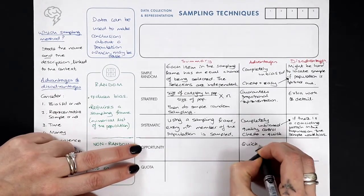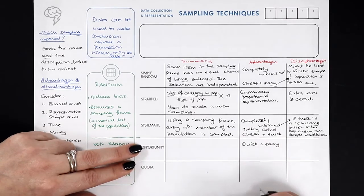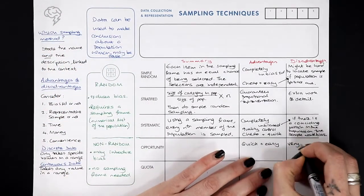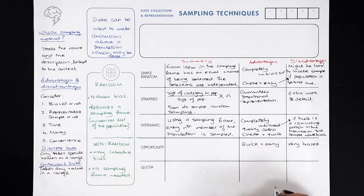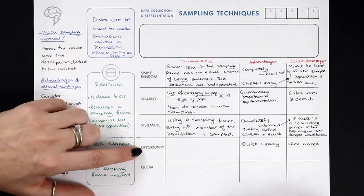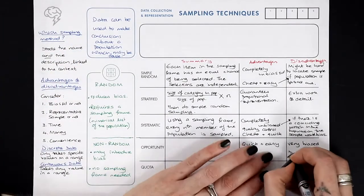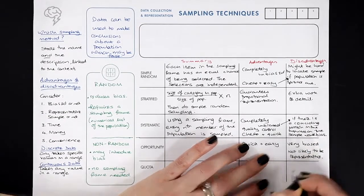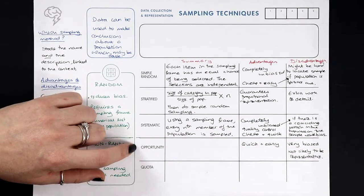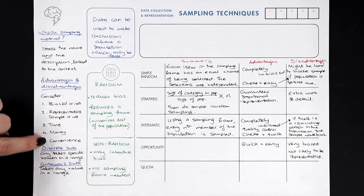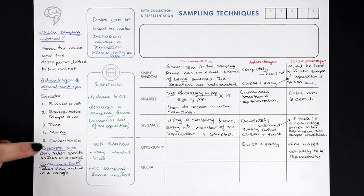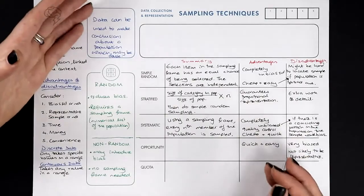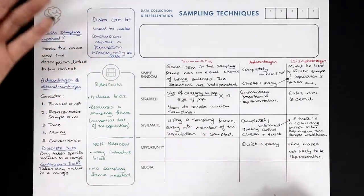Opportunity sampling is quick and easy but gives the researcher complete control over the sample — making it highly biased. You take the sample from the population that is most convenient, which is why it's sometimes called convenience sampling. The researcher just chooses whatever makes their life easiest, so a representative sample is very unlikely.